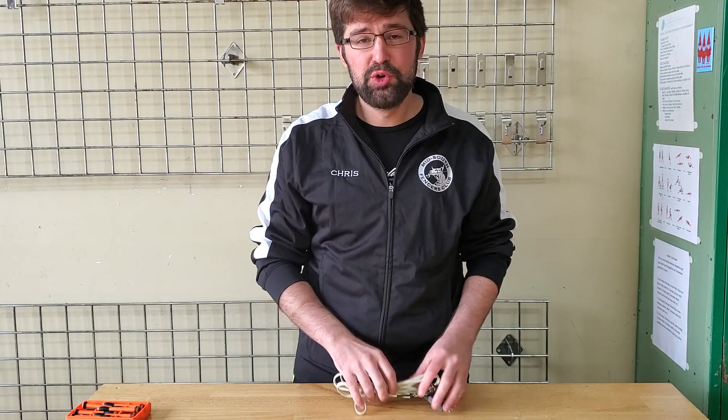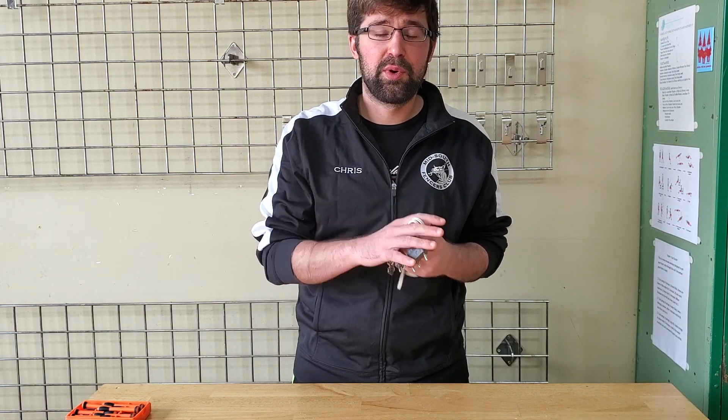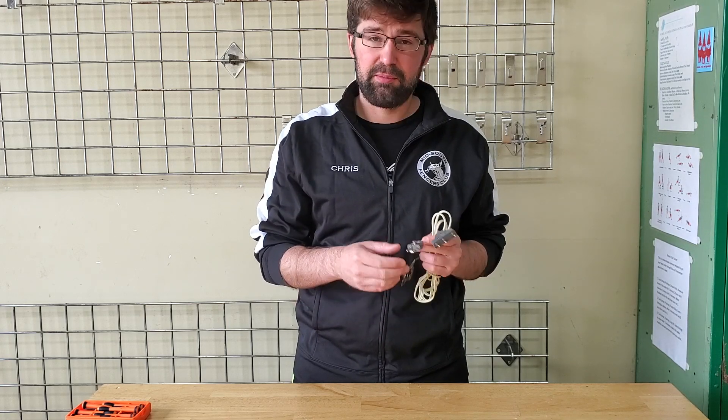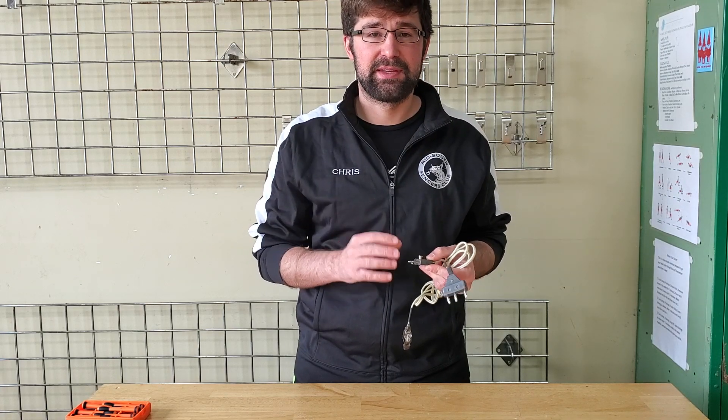Hi there, Chris from Mid-South Fencers Club. We're going to be talking today about how to repair a two-prong foil or saber body cord. Some of the most common problems with these body cords are sweat or moisture getting into the cords, getting them rusty, the prongs becoming detached, or the little fins on the side becoming too narrow to fit in a socket.